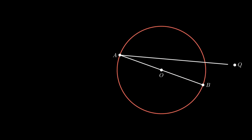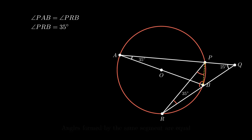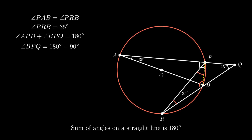Moving on to the next one. Consider a circle with center O and let AB be the diameter. A line segment AQ passes through point P on the circle. Another segment RQ passes through point B on the circle such that angle PQR equals 25 degrees and angle BAP equals 35 degrees. We need to find the measures of angle PBR, angle BRQ and angle BPR. From the figure, angle PAB equals angle PRB as angles formed on the same segment are equal. Also angle APB is 90 degrees as the angle in a semicircle is 90 degrees. Since the sum of adjacent angles on a straight line forms a linear pair, angle BPQ equals 180 minus 90, which gives 90 degrees.